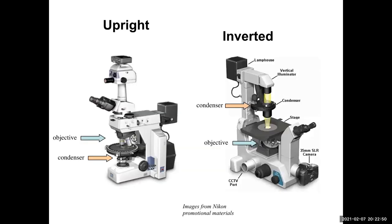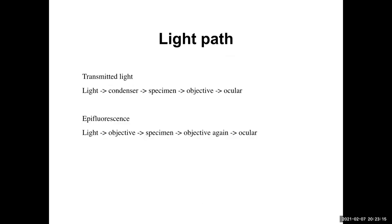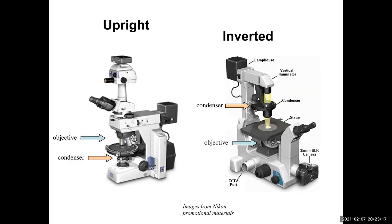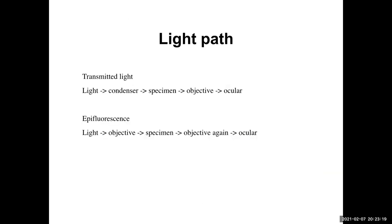Upright scope: the light is at the bottom and it goes up through the specimen and out through the objective. Inverted scope: the light is at the top and it goes down through the specimen into the objective. It's the same fundamental journey — one is basically doing a handstand. So upright vs. inverted scope — that's the first thing to look for when examining your scope.